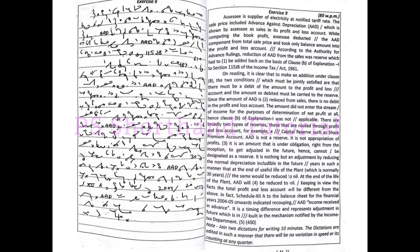At the end of the life of the plant, AAD will be reduced to nil. Keeping in view the facts, the total profit and loss account will be different from the above.